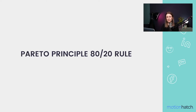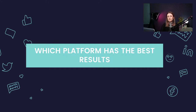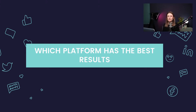I want to talk about the 80-20 rule, or the Pareto principle, which states that 20% of our efforts are usually giving us 80% of the results. Through the lens of social media, we need to track which platforms are giving us the most results and focus on those. If you're not sure, start asking your clients how they find you. I recommend trying a platform for three to six months, and if it isn't working for you, move to a different platform.